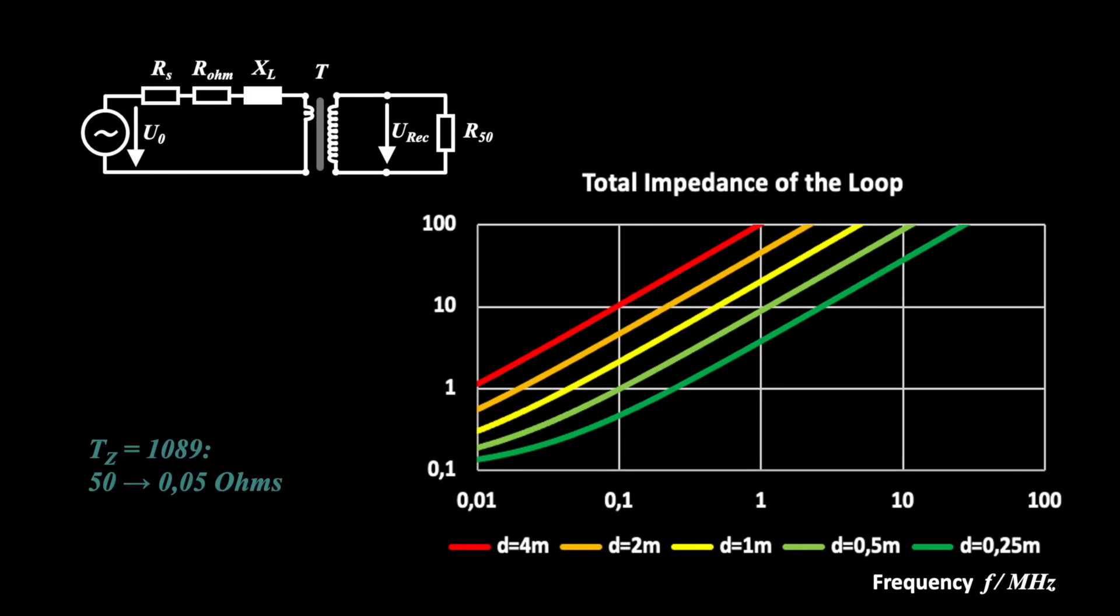With a ratio of 1089, we are transforming the receiver's 50 ohm to 0.05 ohms, pulling maximum current from the loop in the VLF range. With ratio 64, we are reaching the lower LF range.